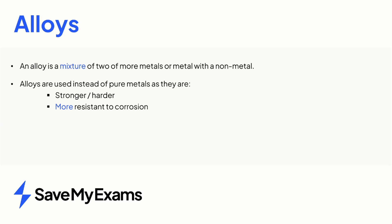In summary, you need to know that an alloy is a mixture of two or more metals, or a metal with a non-metal. Alloys are used instead of pure metals as they are stronger or harder, more resistant to corrosion, and to extreme temperatures. Alloys contain elements of different sizes that distort the regular structure of a pure metal.